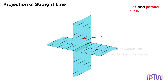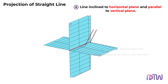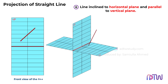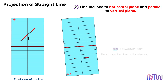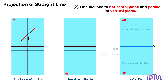Similarly, Position 6: the line can be inclined to the horizontal plane and parallel to the vertical plane. The line makes an angle with the horizontal plane while remaining parallel to the vertical plane. When seen from the front view, the line is at an angle with the reference line. When viewed from the top, it looks shorter than its actual length — because the line is inclined at an angle with the horizontal plane. This is how the line looks in the front and top views.